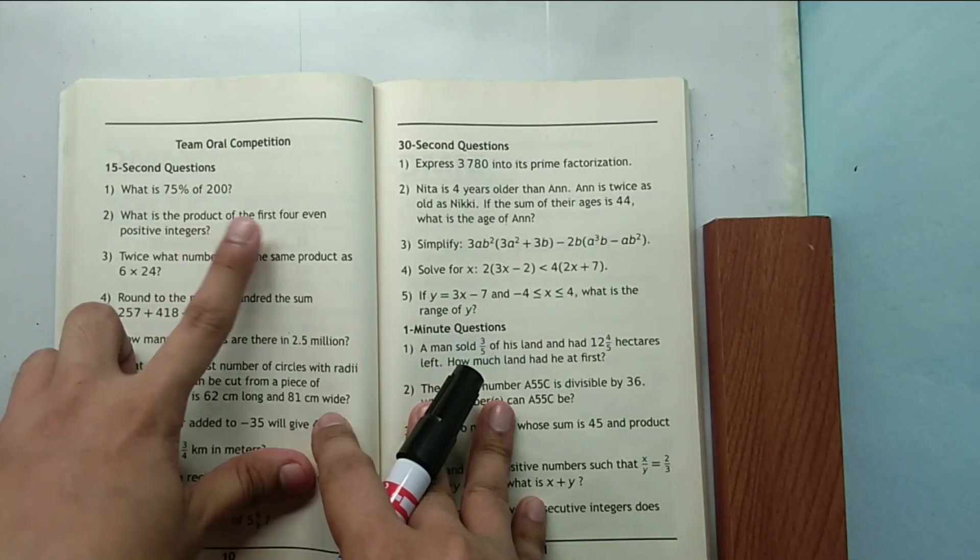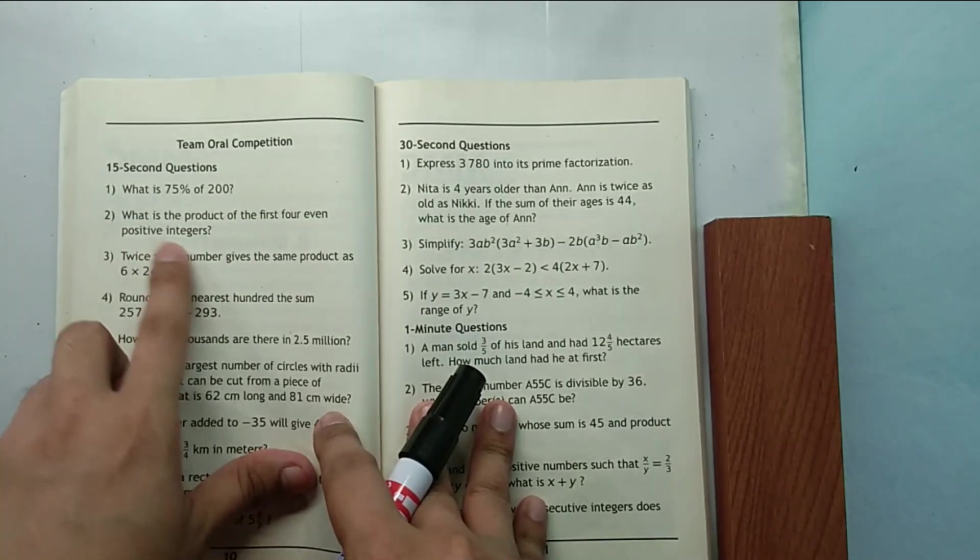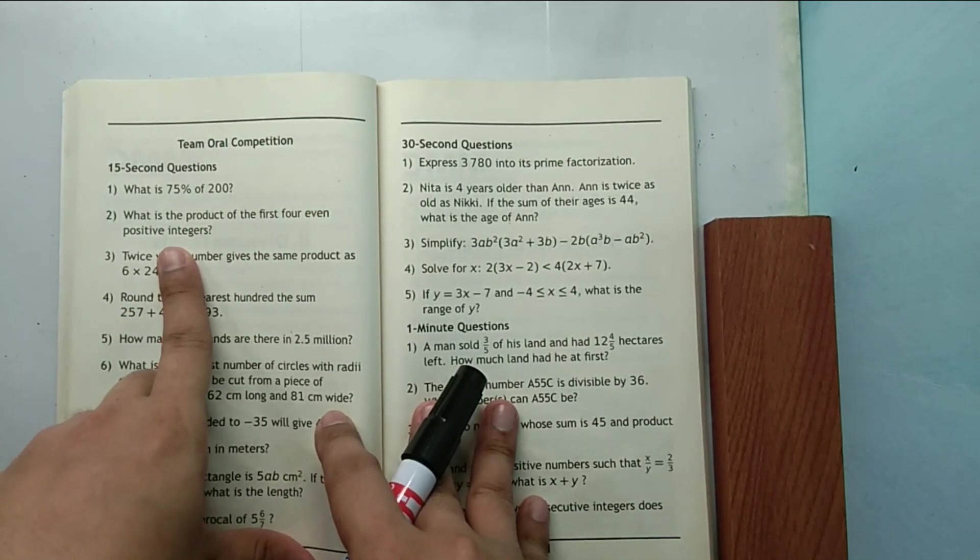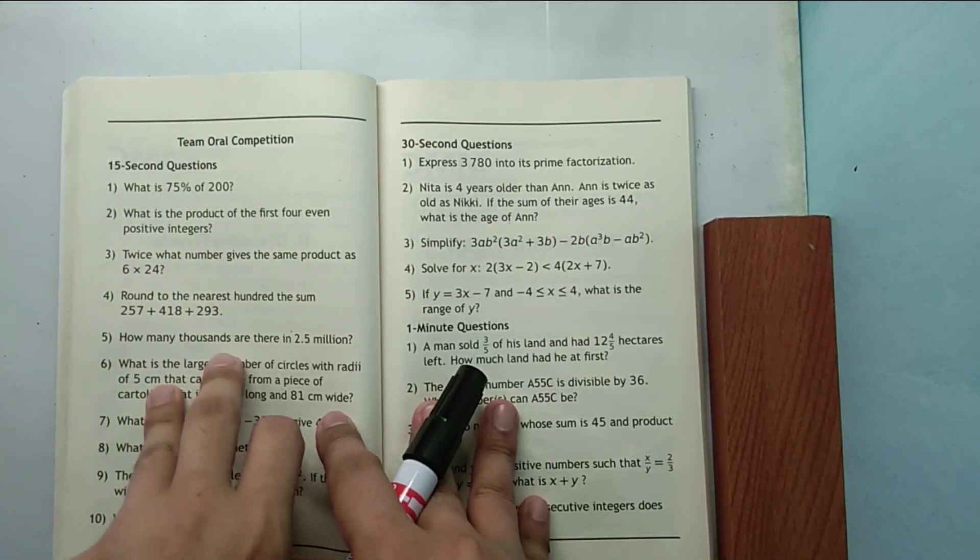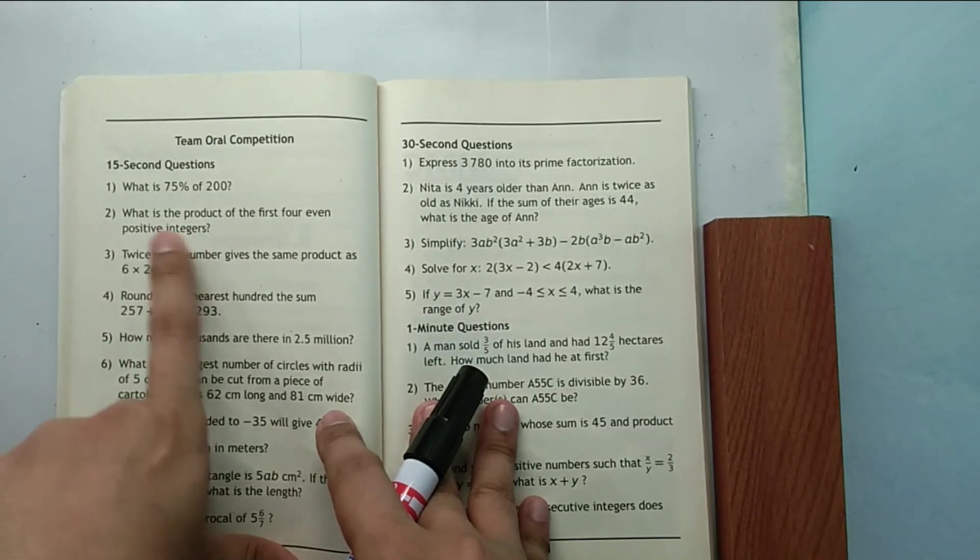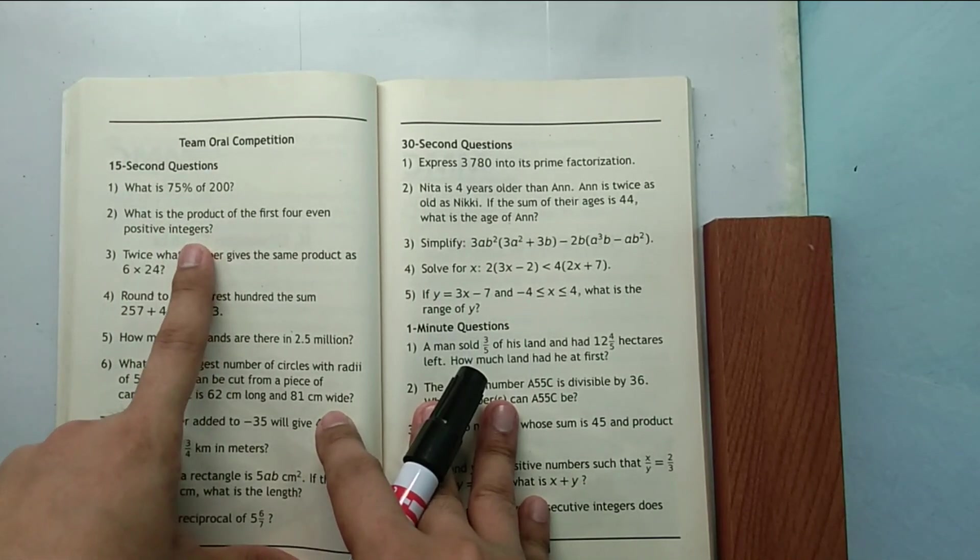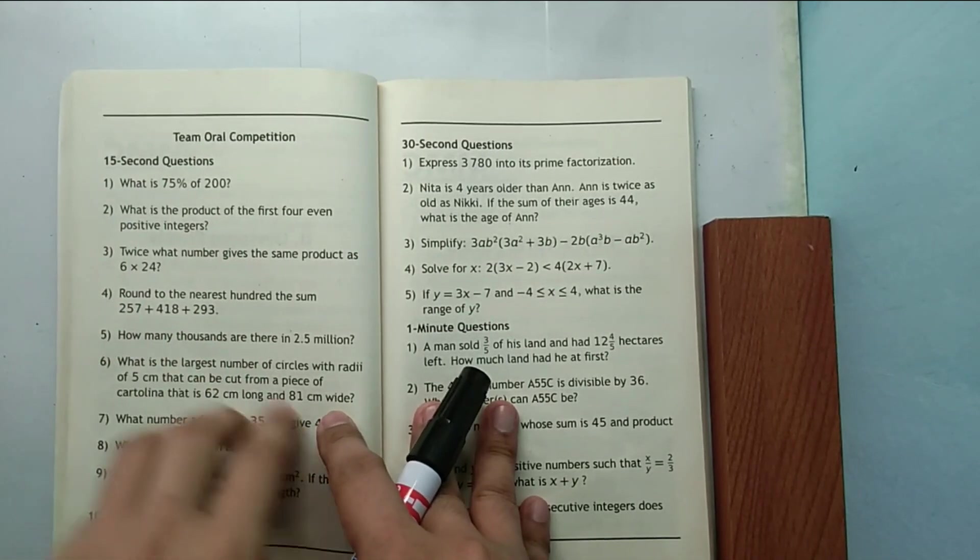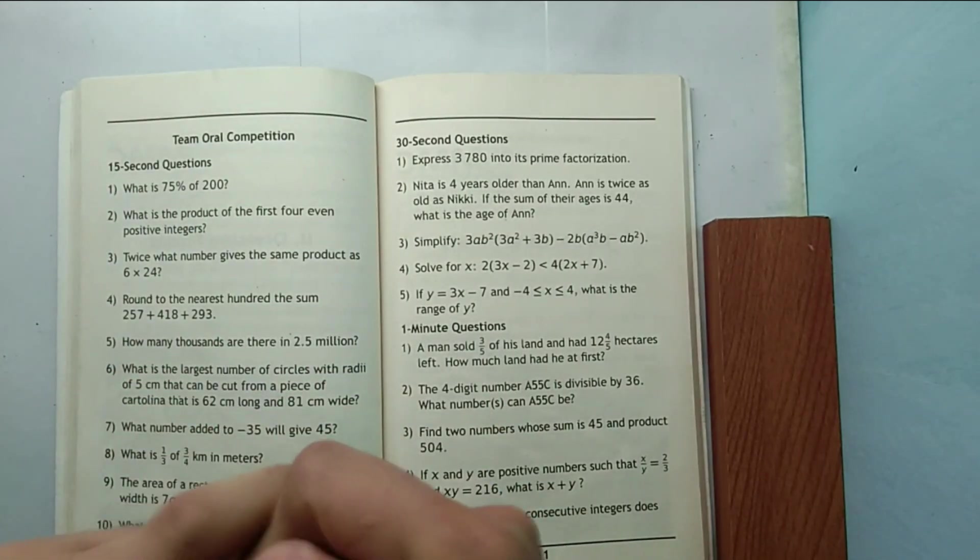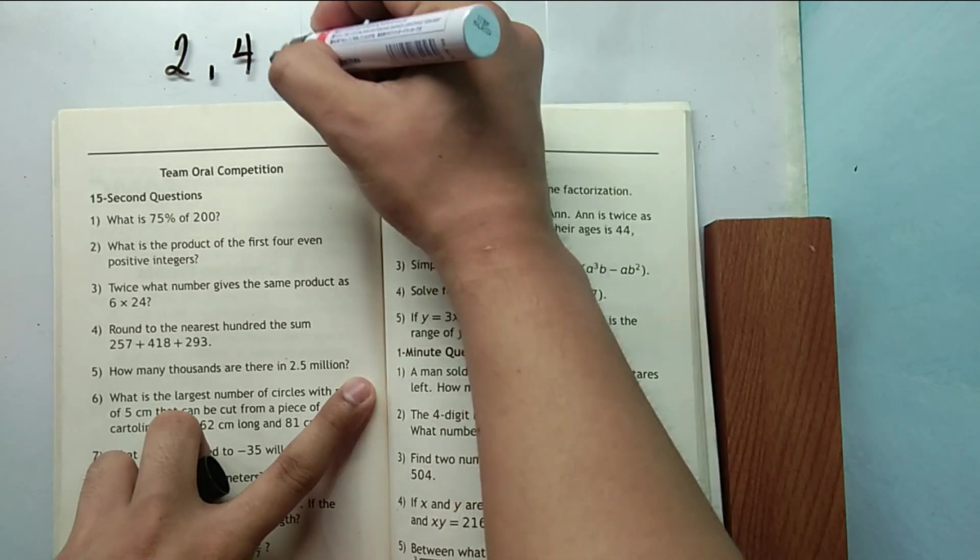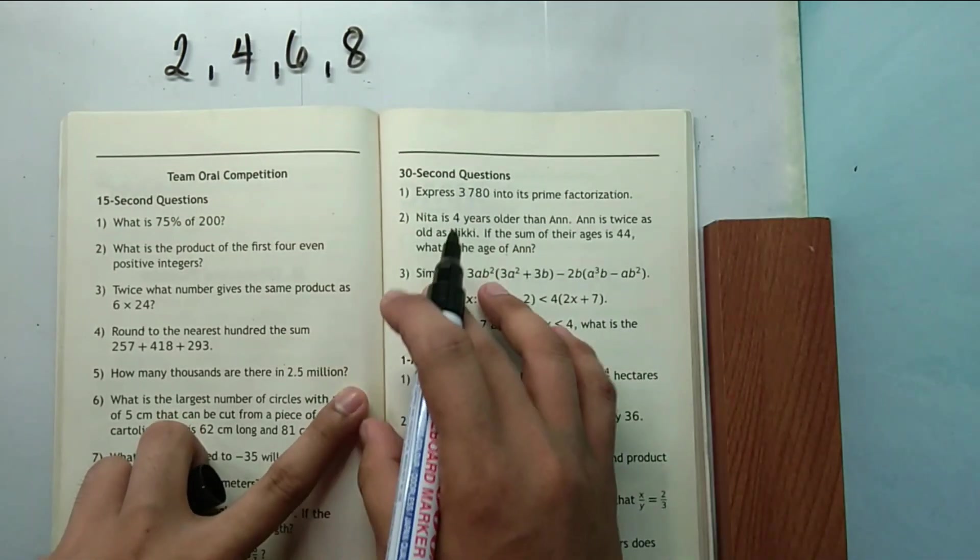What is the product of the first four even positive integers? Take note, even integers are integers or numbers which are divisible by two, including zero. But in this case, since the question only asked for positive integers, we will disregard zero. So in the lesson presented earlier, zero is neither positive nor a negative number. So we will have the numbers 2, 4, 6 and 8 to be multiplied.